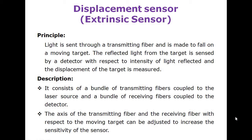Any object is moving — just focus the light source on that particular object. The reflected light from the target is sensed by a detector. First, focus the light source on any moving object; the light strikes the object and reflects. The reflected light source is sensed using a detector, and with respect to the intensity of reflected light, the displacement of the target is measured.